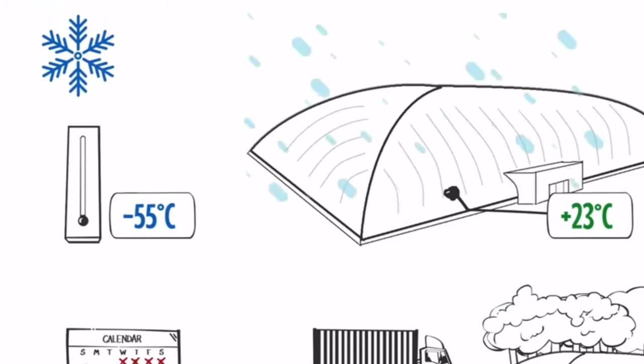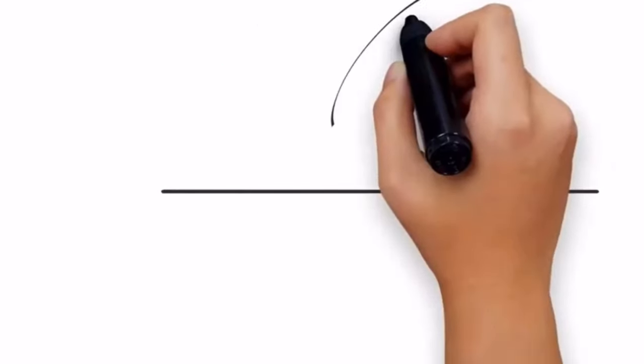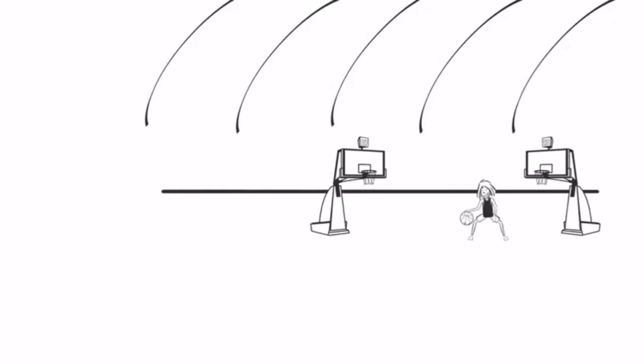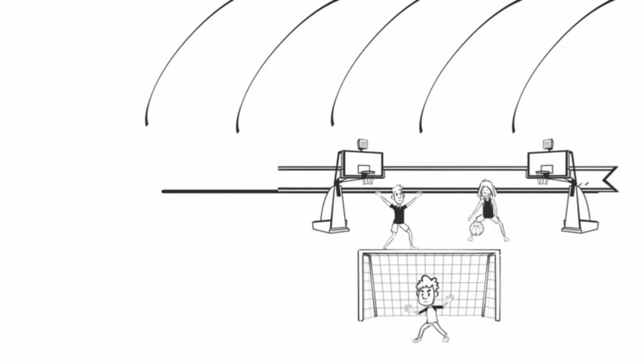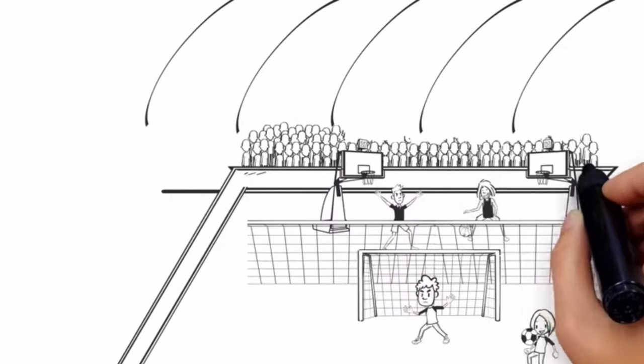The clear span in the air dome will allow for a variety of sports to be played inside. This means that more teams can play different games at the same time.